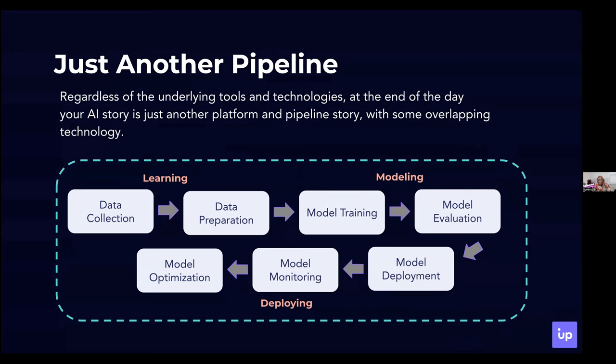The AI platform is just another pipeline — regardless of the underlying tools and technologies, it's still a platform. We talked about the three phases: learning, modeling, and deploying. More specifically, the learning stage involves data collection and data preparation. The modeling stage is where you do model training and model evaluation. The deploying stage is where you take that model, deploy it, monitor it, and do all the lifecycle management and optimizations. At the end of the day, you're still just building a platform — the workflow is just a little bit different.